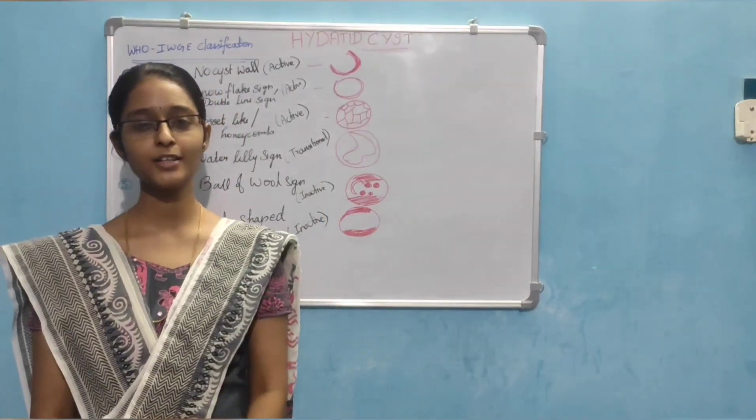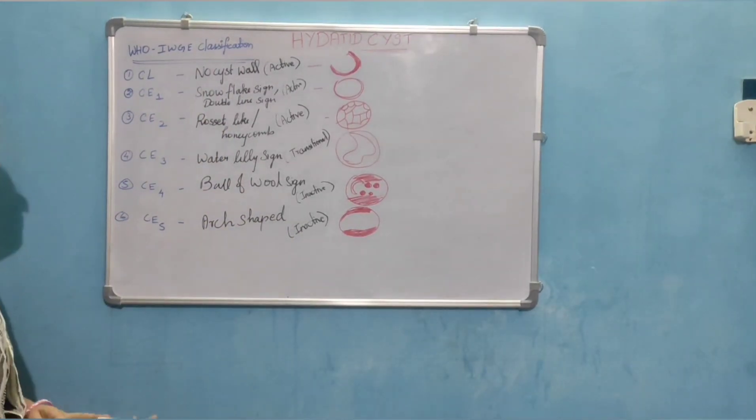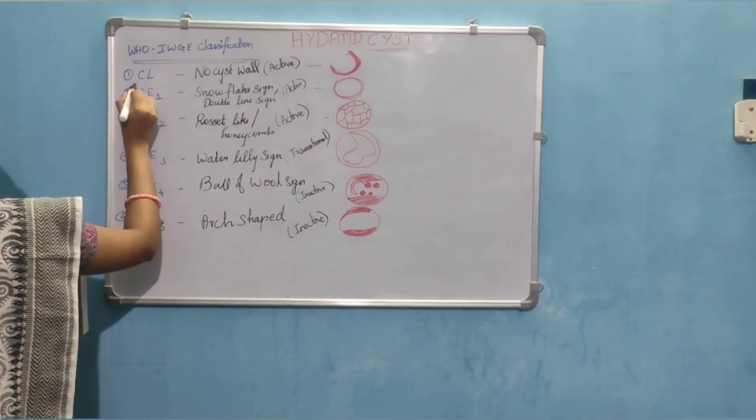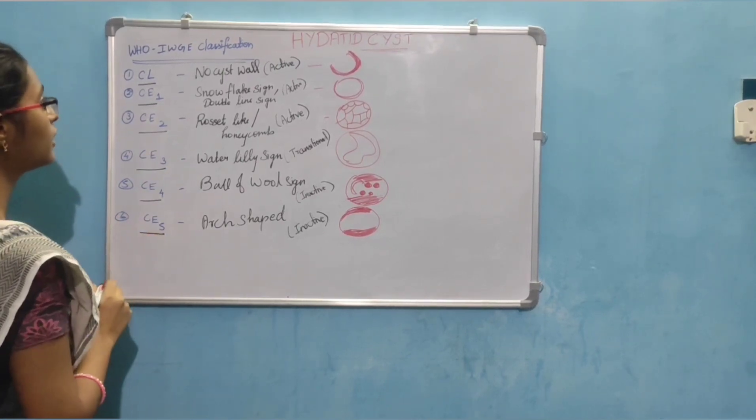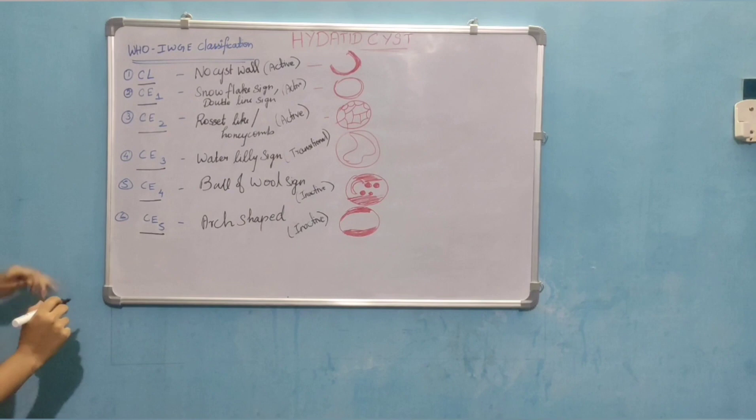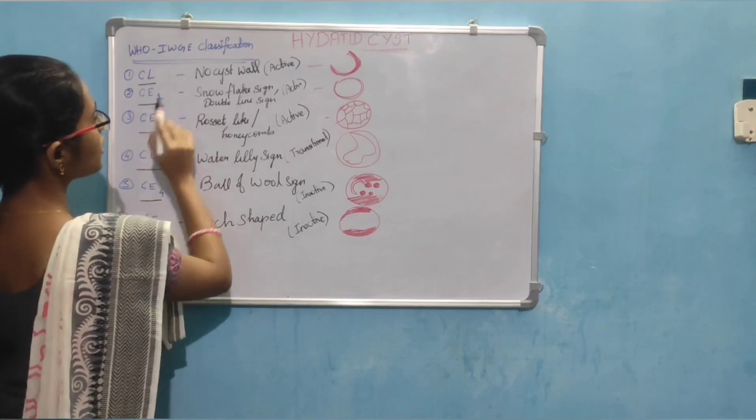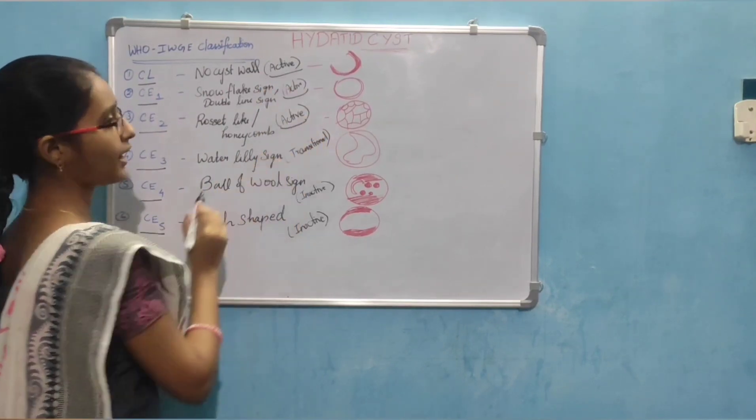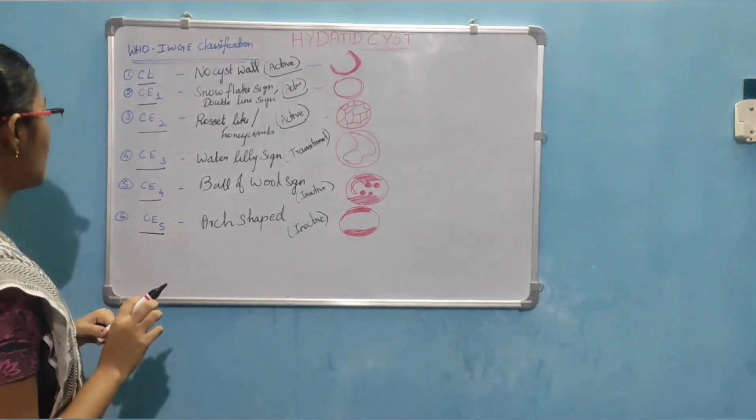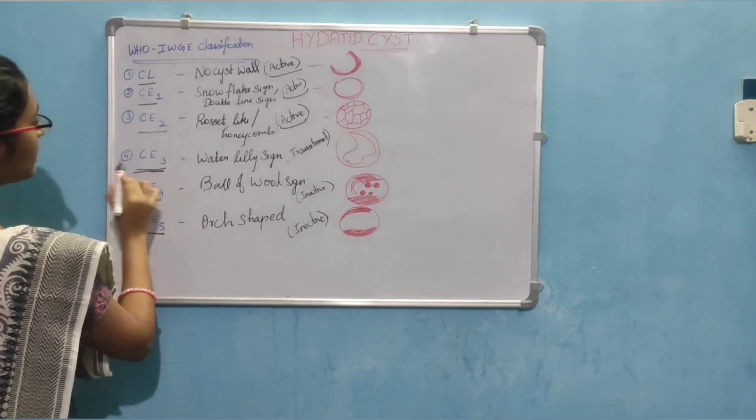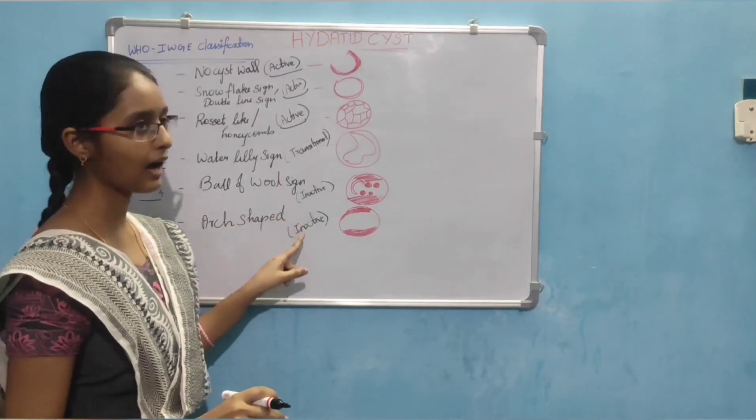It's about the classification of hydatid cyst: WHO-IWGE classification. There are CL, CE1, CE2, CE3, CE4, and CE5. They have classified into six groups. First three are in active stage. Active cyst: first three up to CE2 is active cyst. And CE3 is transitional cyst. And CE4 and CE5 is inactive cyst.